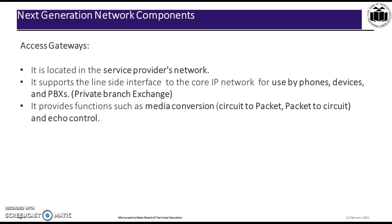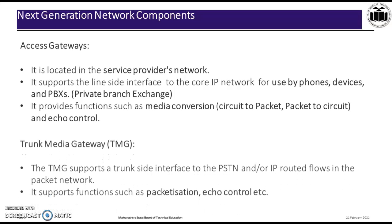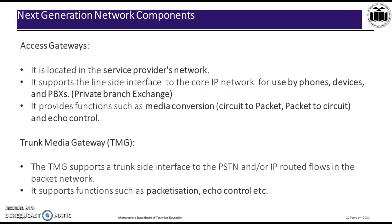The Access Gateway is located in the service provider network. It supports lines and interfaces to the core IP network for use by phones, devices, and private branch exchanges. It provides functions such as media conversion — circuit to packet and packet to circuit — and echo control.